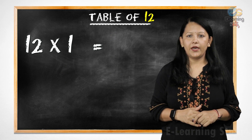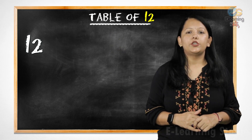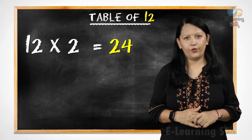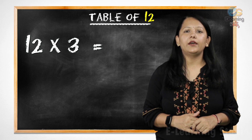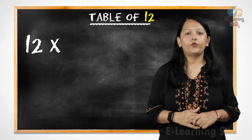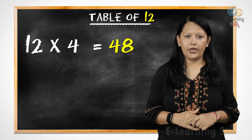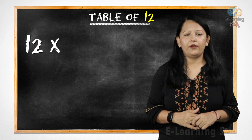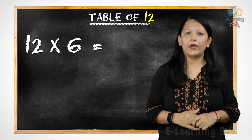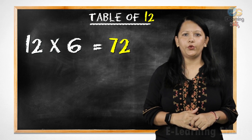12 ones are 12, 12 twos are 24, 12 threes are 36, 12 fours are 48, 12 fives are 60, 12 sixes are 72.